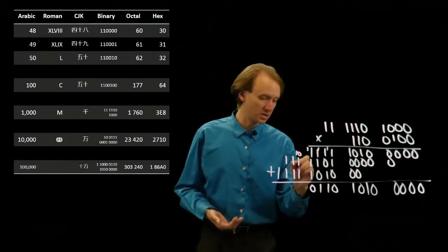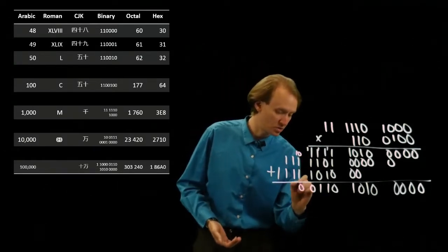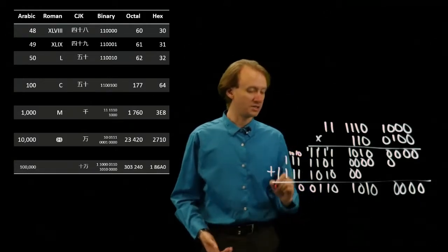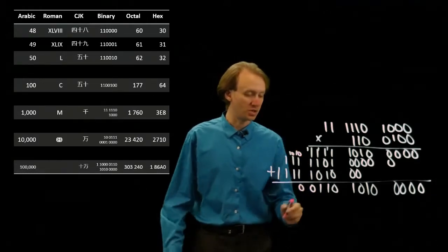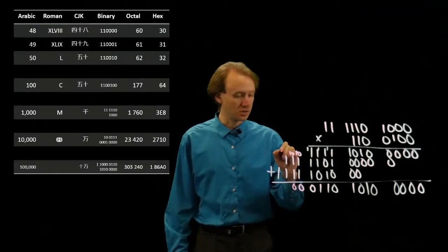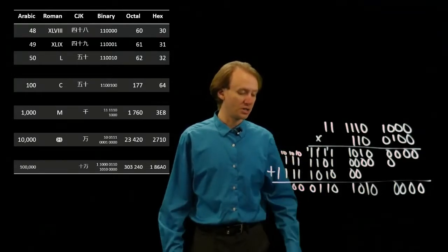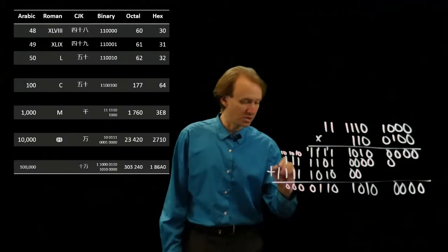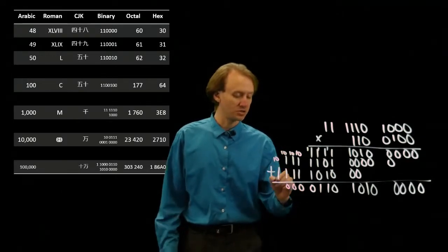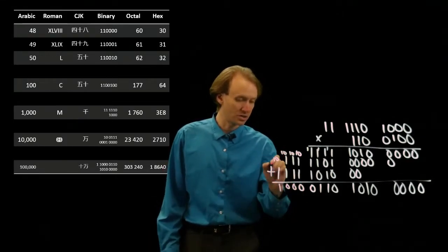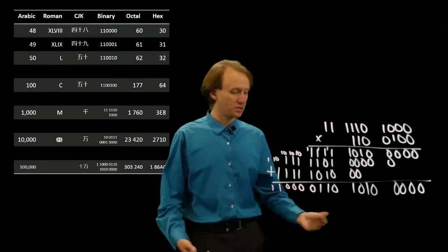So if I do this, 10 plus 1 plus 1 is 100, so I'll write down a 0, carry a 10, 10 plus 1 plus 1 is 100, 0 carry a 10, 10 plus 1 plus 1 is 100, so 1 carry a 1, and then I've got that.